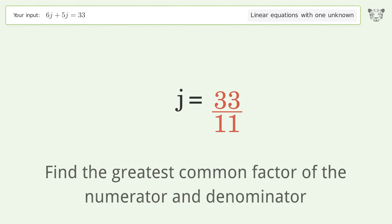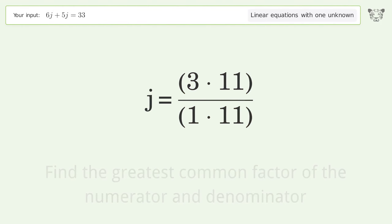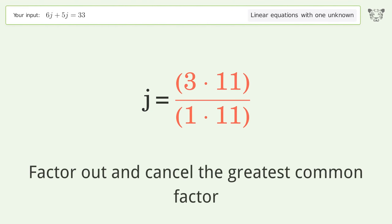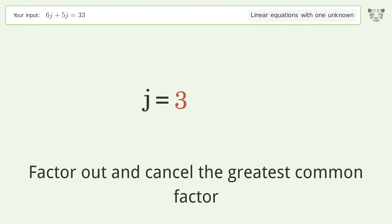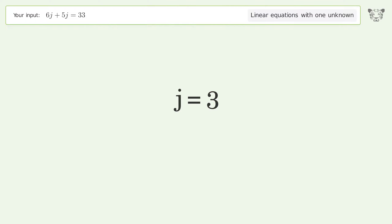Find the greatest common factor of the numerator and denominator, then factor out and cancel the greatest common factor. And so the final result is j equals 3.